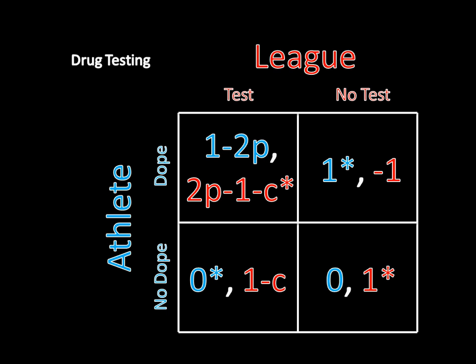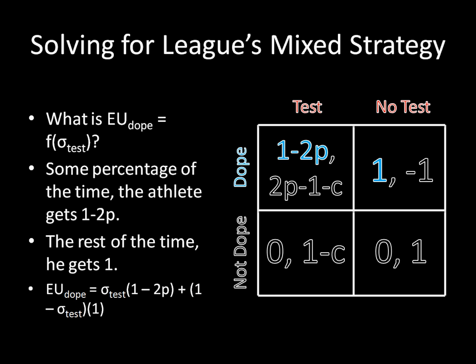We can solve for the mixed strategy Nash equilibrium. We're interested in whether the league tests more or less frequently as P increases, so we need to solve for the league's mixed strategy. To do that, we ask: what is the expected utility for the athlete for doping? That's a function of sigma_test — the probability that the league tests. If the league tests with probability sigma_test, the athlete gets a payoff of one minus two P that fraction of the time, and one the rest of the time.